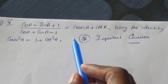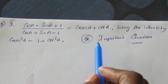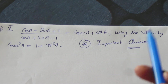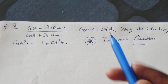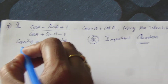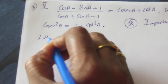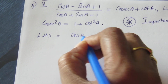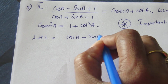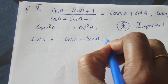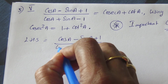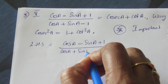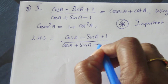Students, this question is very very important. Listen carefully. Let us solve the left hand side first. Left hand side is cos a minus sin a plus 1, divided by cos a plus sin a minus 1.